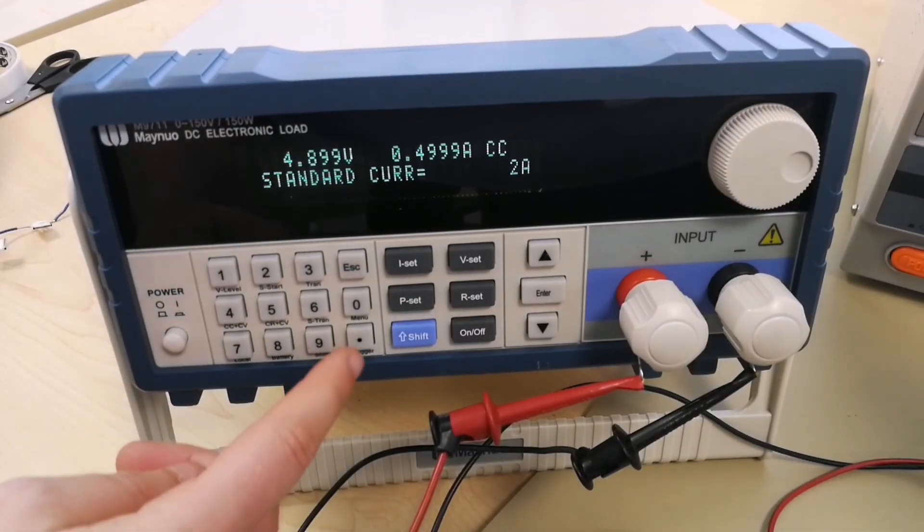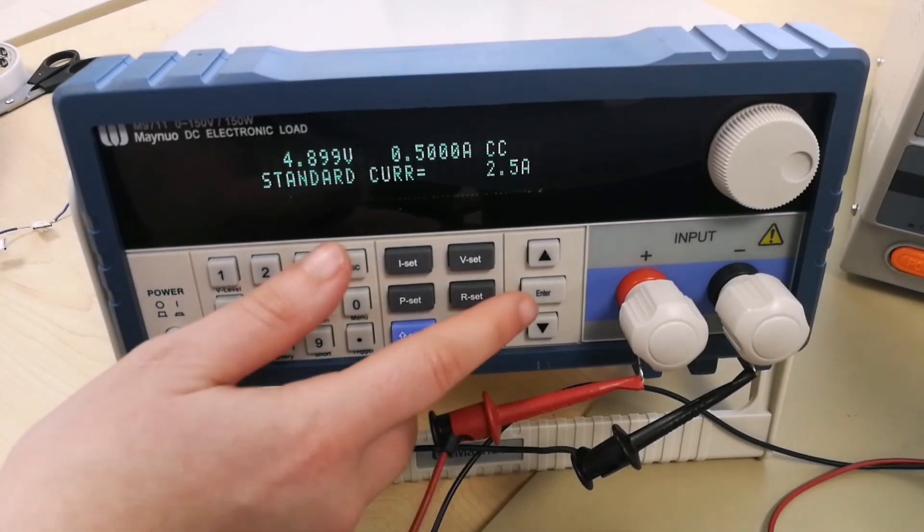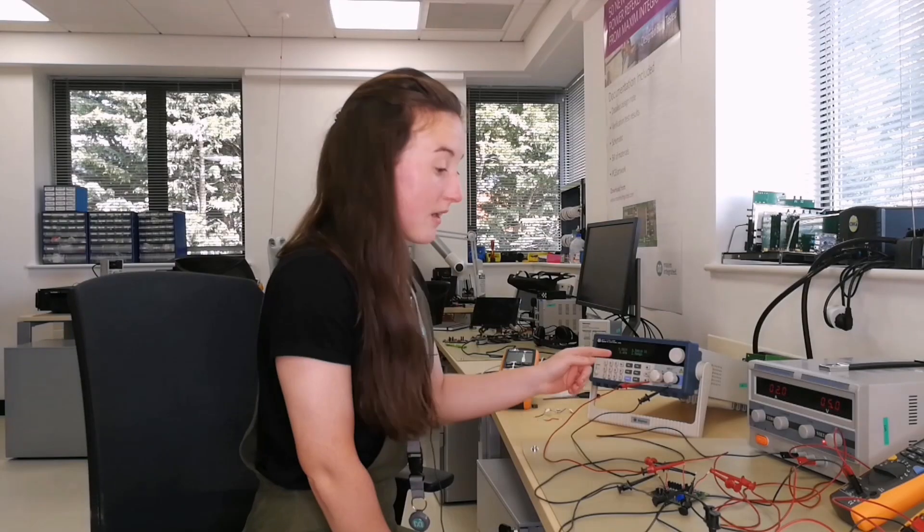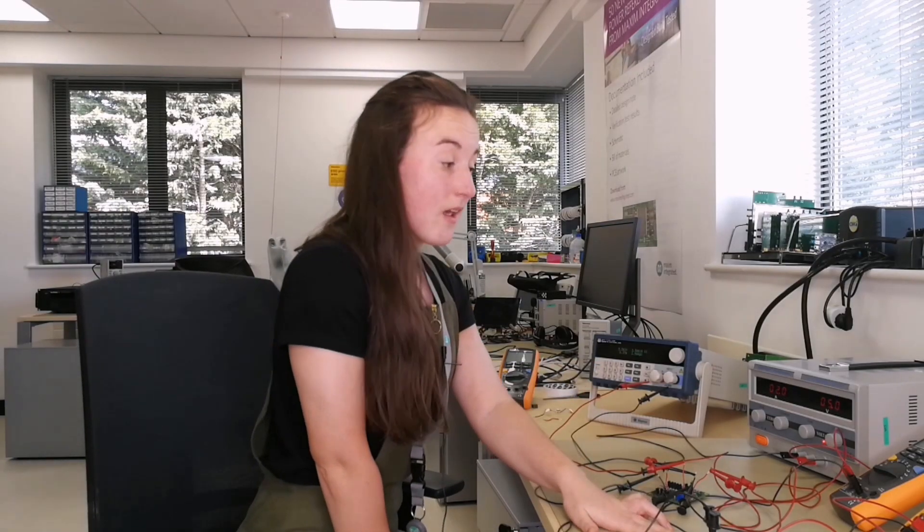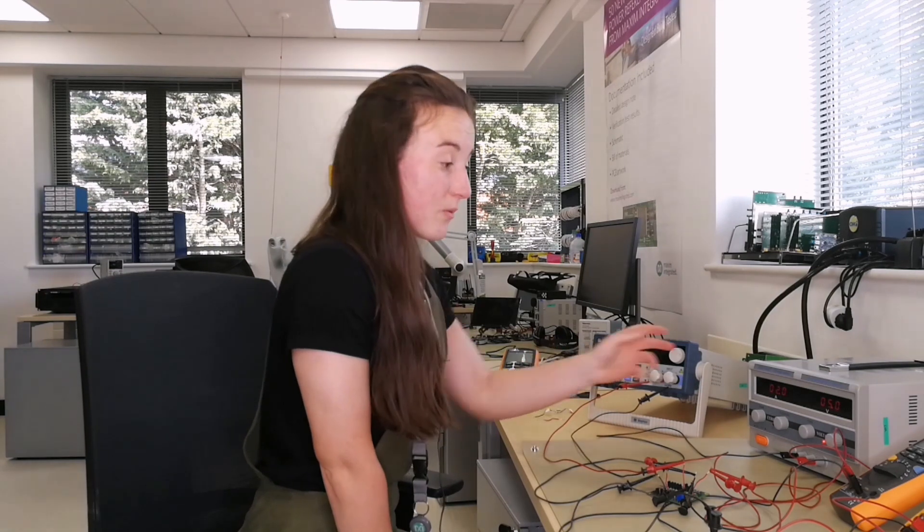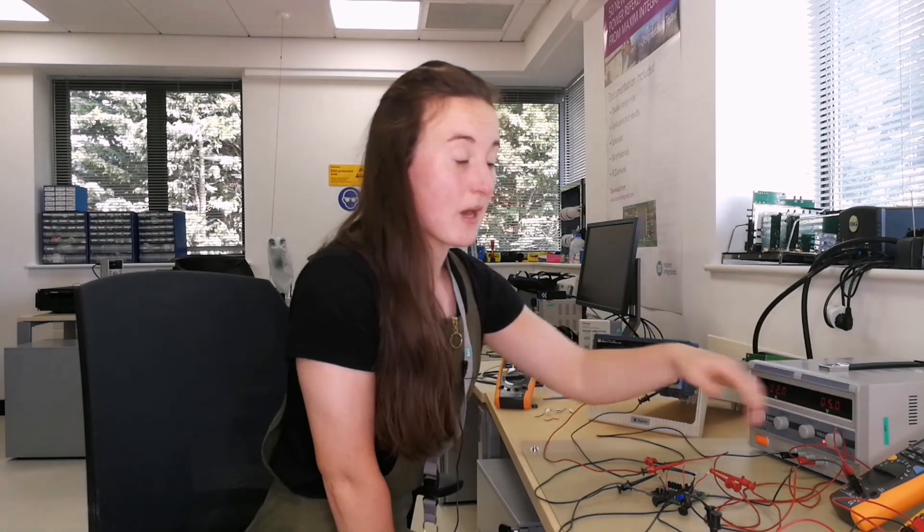But say the system load needs 2.5 amps. The battery then kicks in and supplies the remaining current to the system load. We can see that here from the negative current coming from the battery.